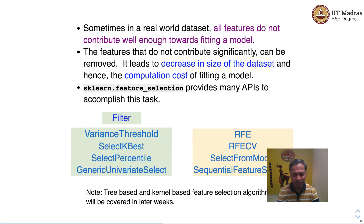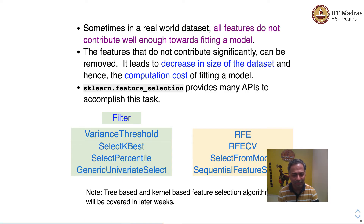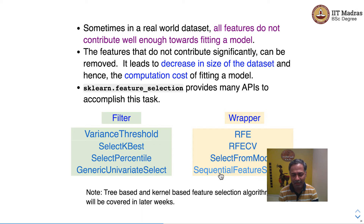The first four feature selection methods are basically the filter methods: VarianceThreshold, SelectKBest, SelectPercentile, and GenericUnivariateSelect are filter-based feature selection methods. Whereas the other four methods — Recursive Feature Elimination, Recursive Feature Elimination with Cross-Validation, SelectFromModel, and SequentialFeatureSelector — are wrapper-based methods.